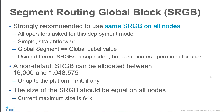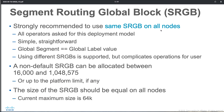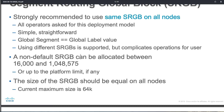Cisco strongly recommends using the same sRGB on all nodes, and most operators follow this deployment model. A global segment equals a global label value. Using a different sRGB is supported but complicates things. A non-default sRGB can be located between 16,000 and 1,048,575, or up to a platform limit. The size of sRGB should be equal on all nodes, with a current maximum value of 64,000.